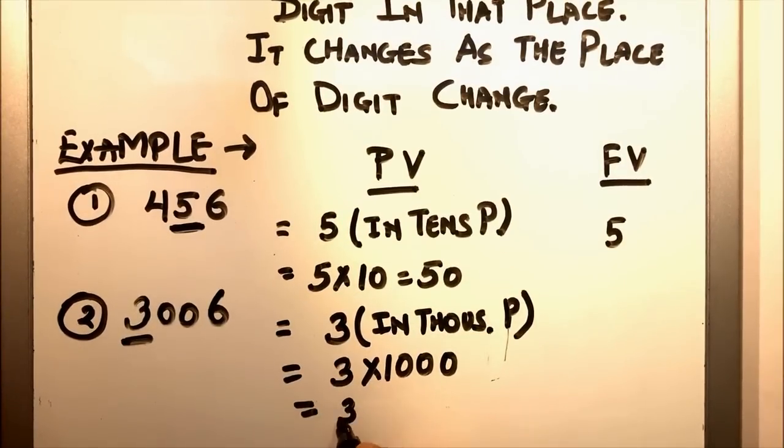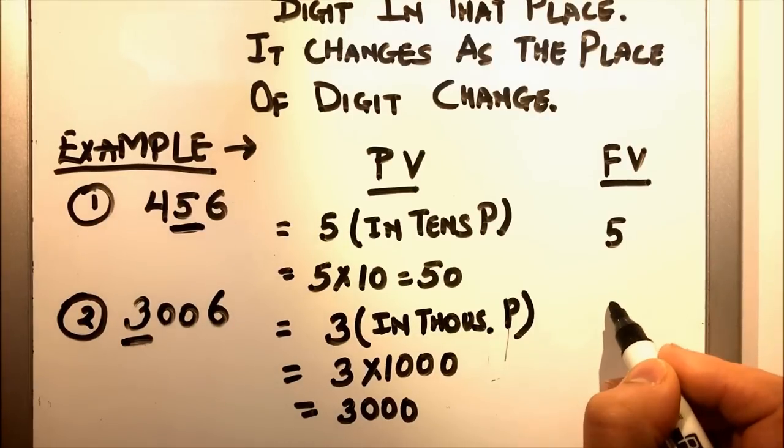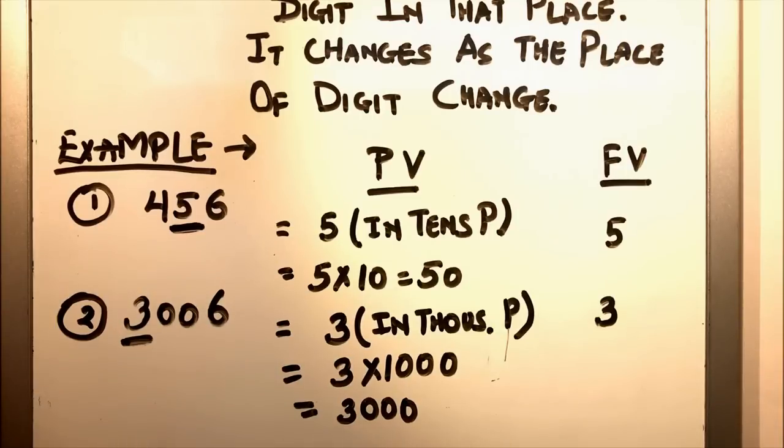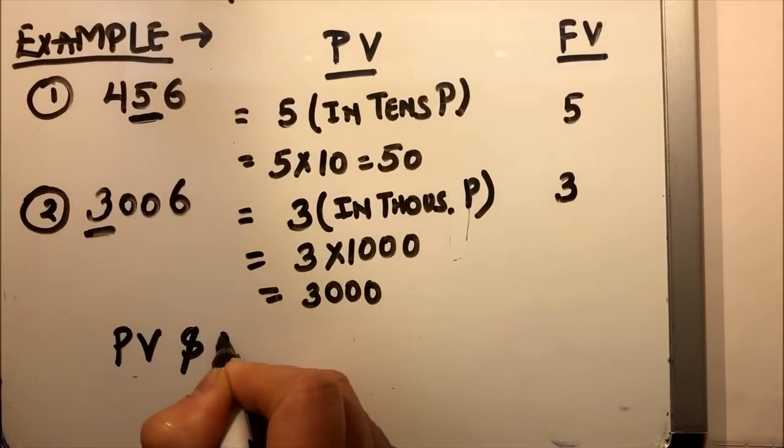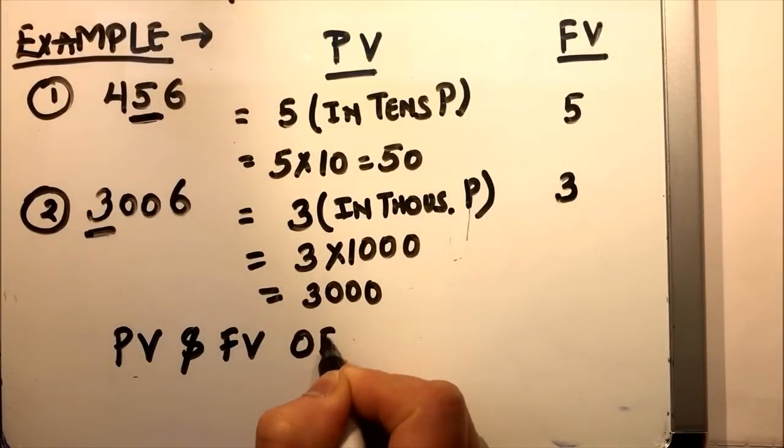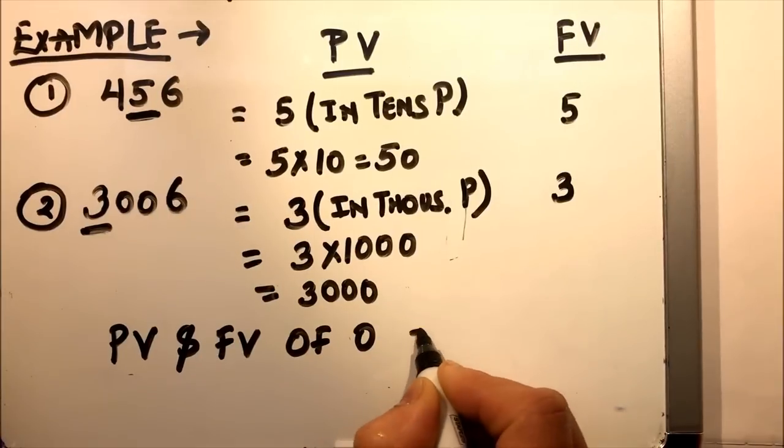Whereas the face value of 3 will remain the same as 3. This is how we find the place value of the digits. Here there is one exception: the place value and face value of 0 will remain 0, irrespective of the place it is.